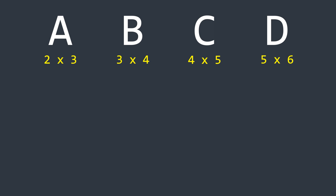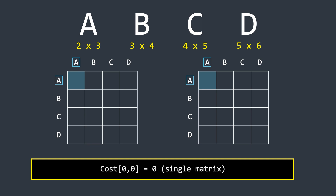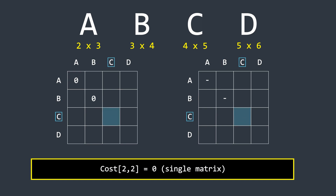Let's understand this with an example involving four matrices A, B, C, and D. Grab a pen and paper to follow along. We initialize two tables with dimensions 4×4 — equal to the number of matrices. In the first table we store the number of operations required to multiply different sets of matrices. In the second table we store the split points. For the base case, multiplying any matrix with itself requires zero operations, so we fill the diagonal with zeros and mark nil in the second table.